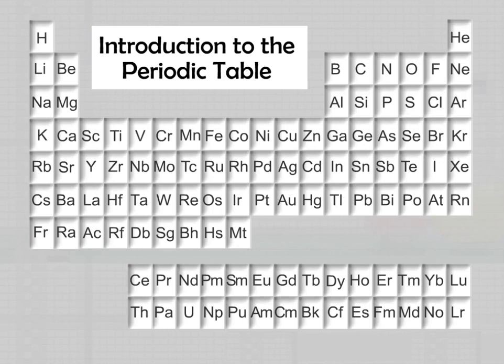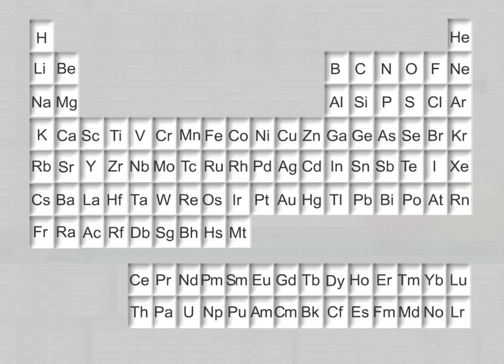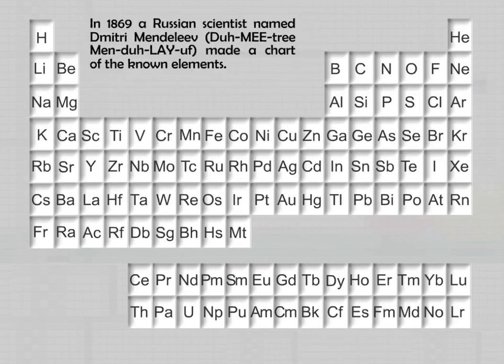Introduction to the Periodic Table. In 1869, a Russian scientist named Dmitry Mendeleev made a chart of the known elements. The chart is called the Periodic Table of Elements.